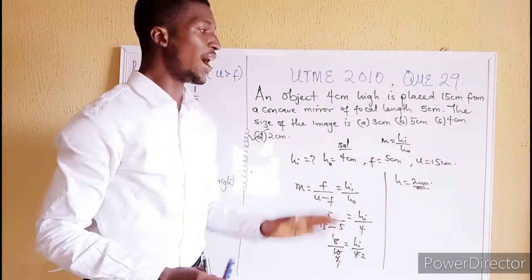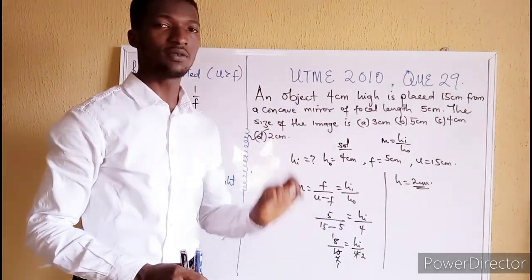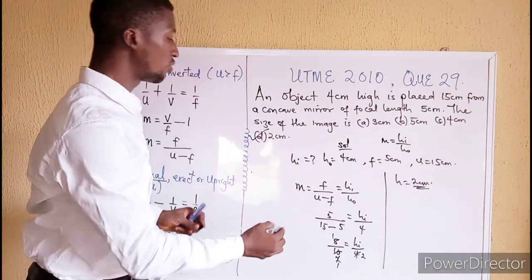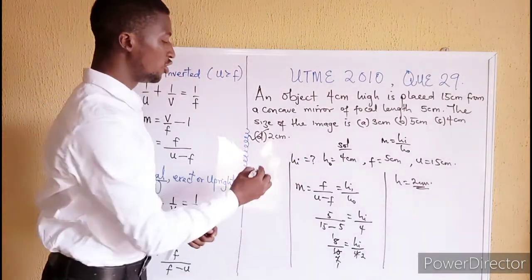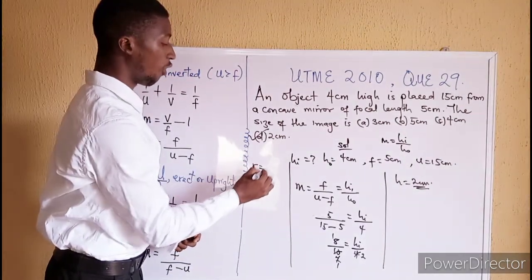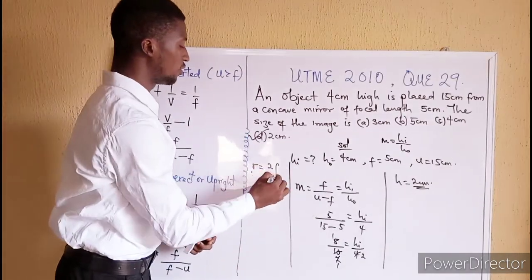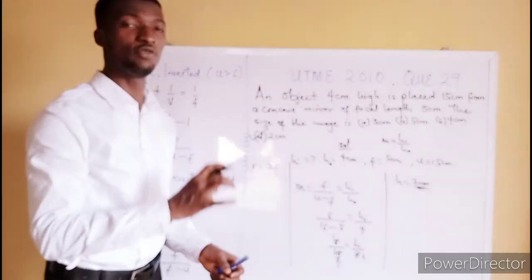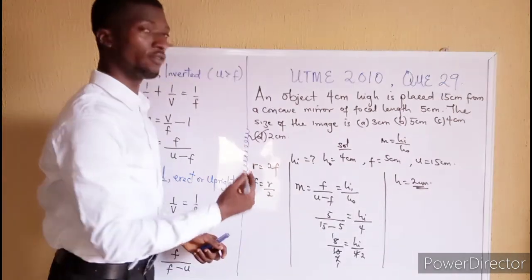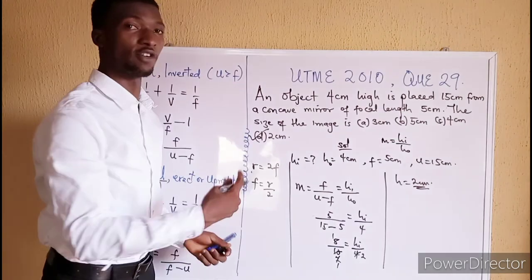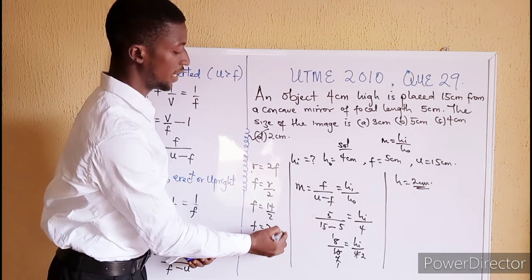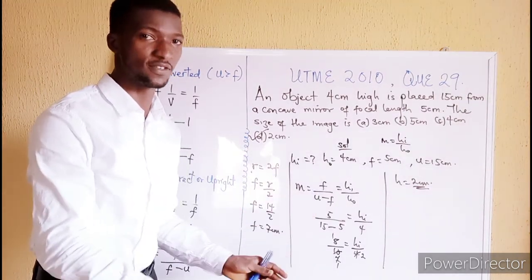I want to introduce something important: there are cases where the focal length is not given directly. In that case, the radius of curvature will be stated. Note that the radius of curvature is twice the focal length, so F = radius of curvature / 2. For instance, if the radius of curvature of a concave mirror is 14 cm, then the focal length is 14/2 = 7 cm. You can then use it with all the formulas provided.